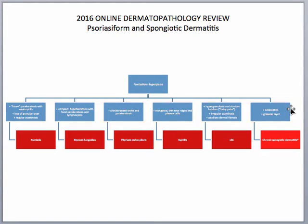Lastly, if you have psoriasiform hyperplasia and you see eosinophils but a retained granular layer, you also want to think about chronic spongiotic dermatitis, which can present in either the spongiotic or the psoriasiform pattern.